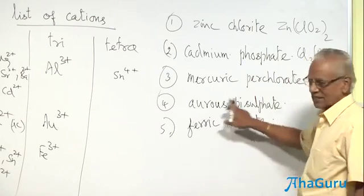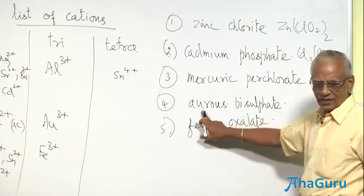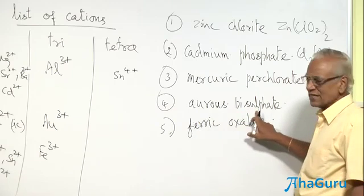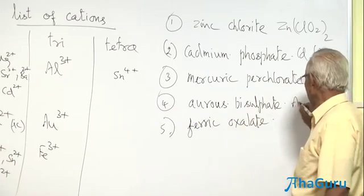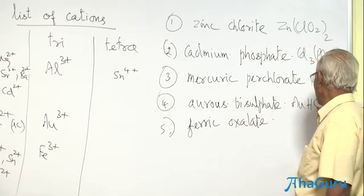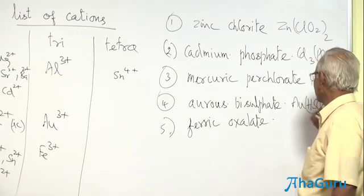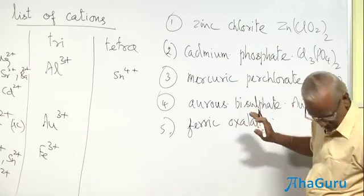Aurous, valency 1 and 3, 1 is aurous. Bisulfate, HSO4-. Au(HSO4). Valency 1 and valency 1.